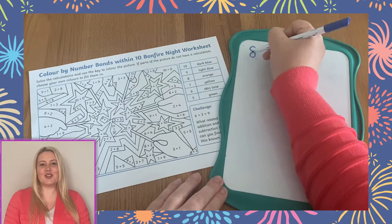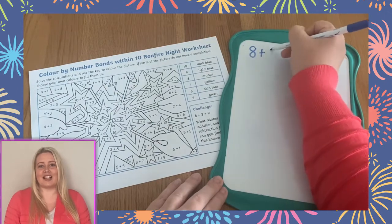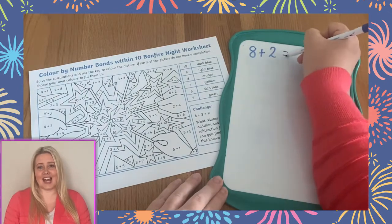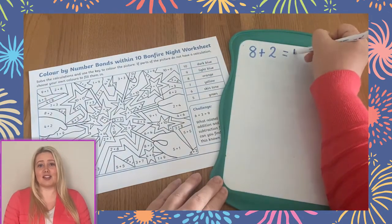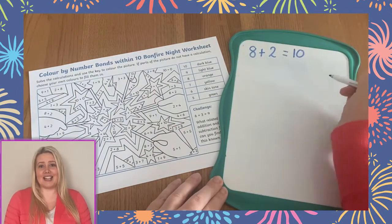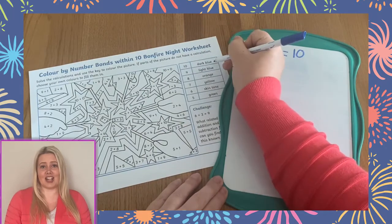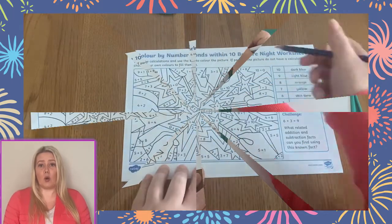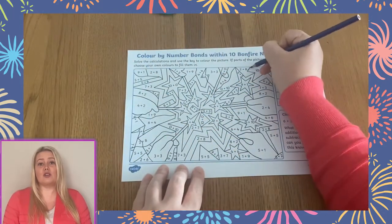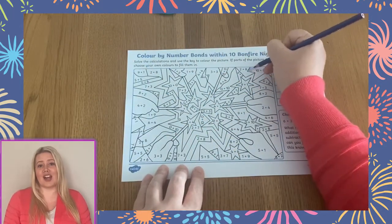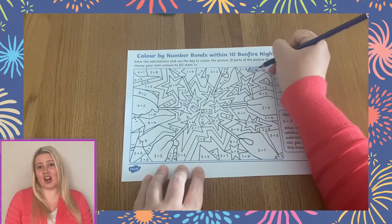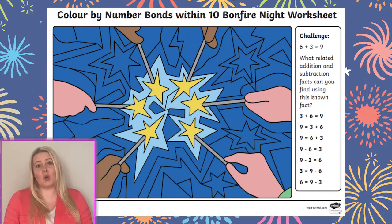Learners could do this one calculation at a time by solving a calculation and then colouring that section, or they could solve all of the calculations first and do all of the colouring afterwards.